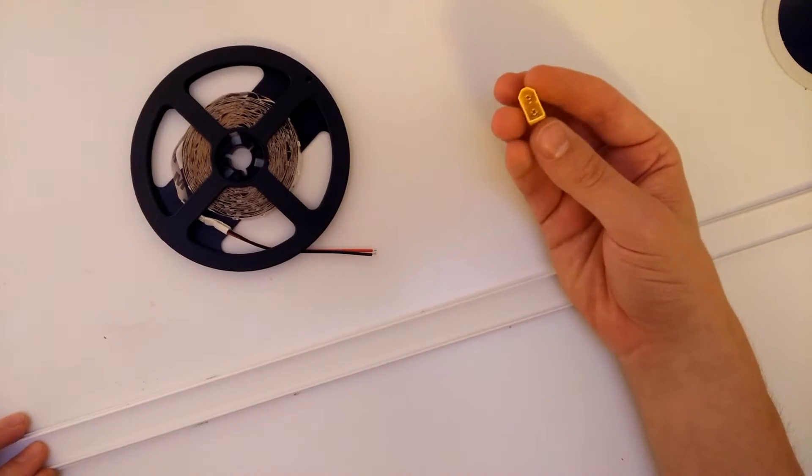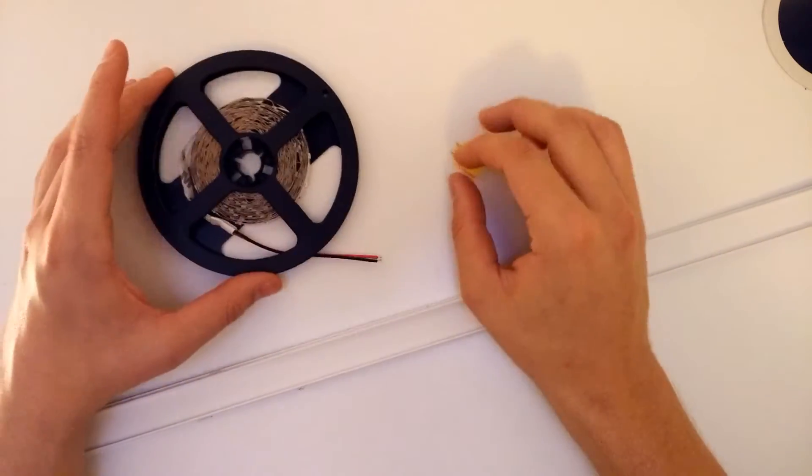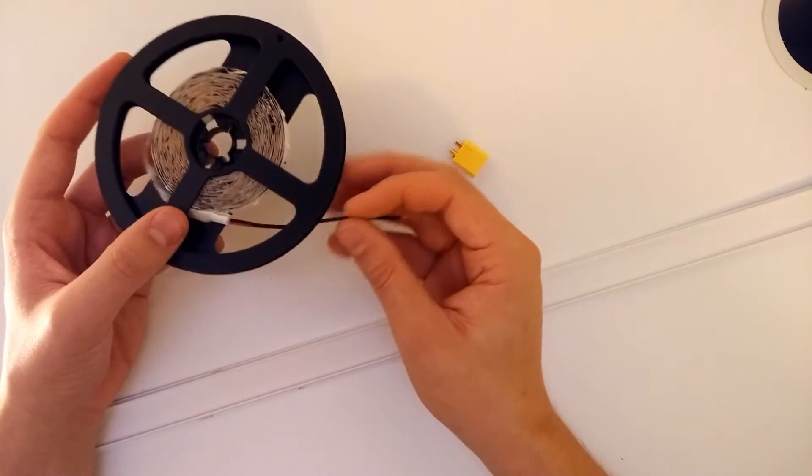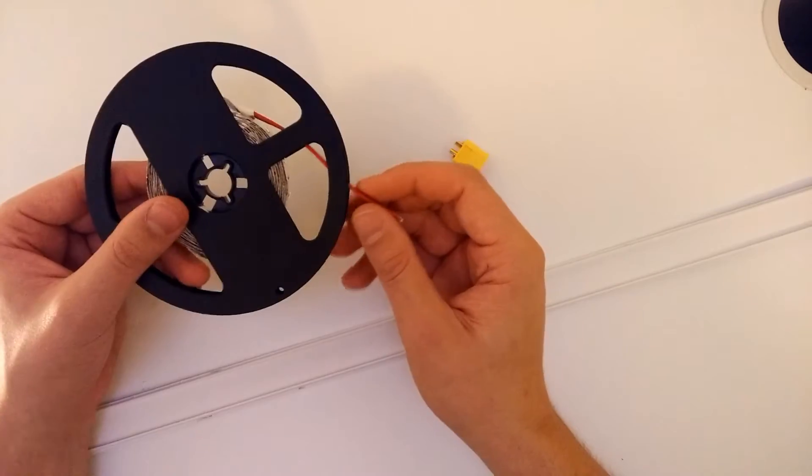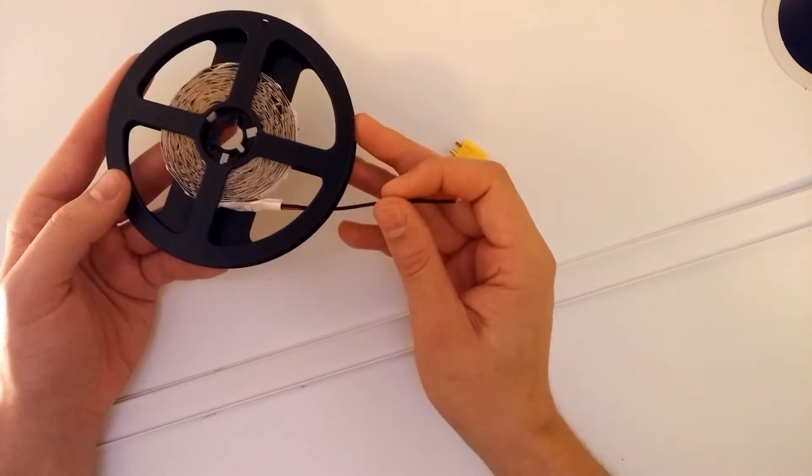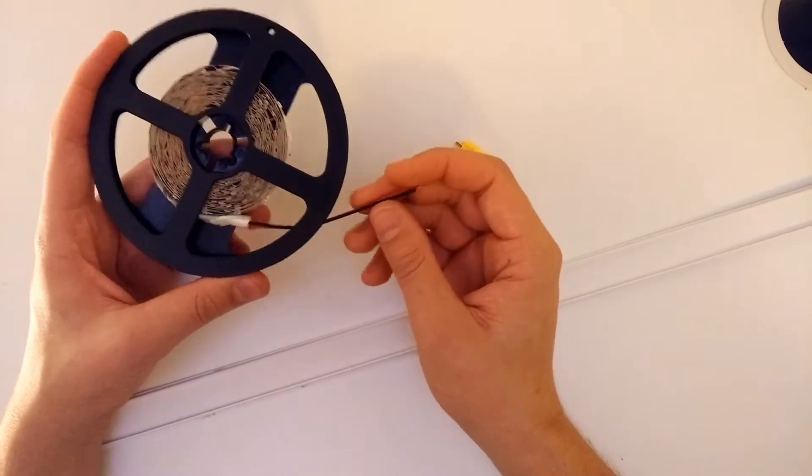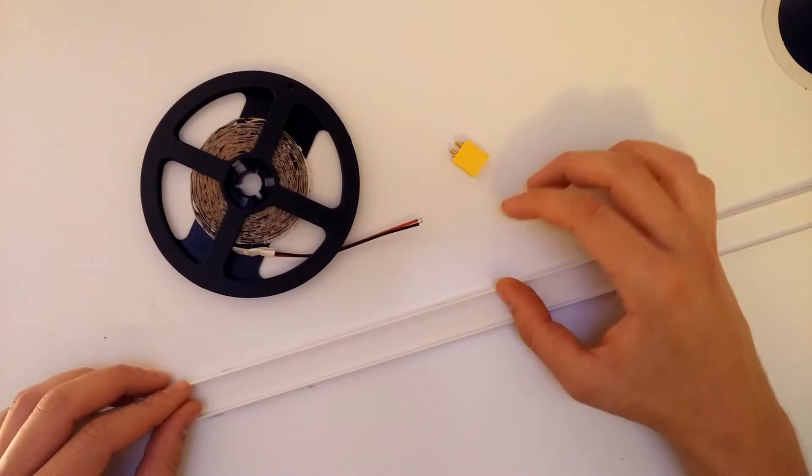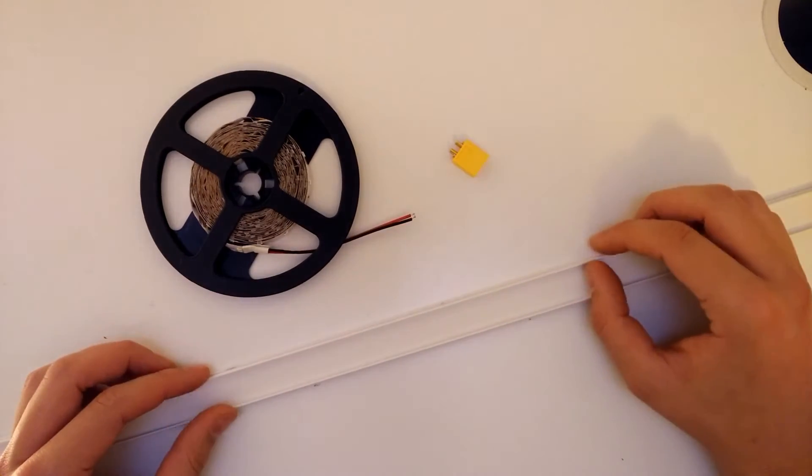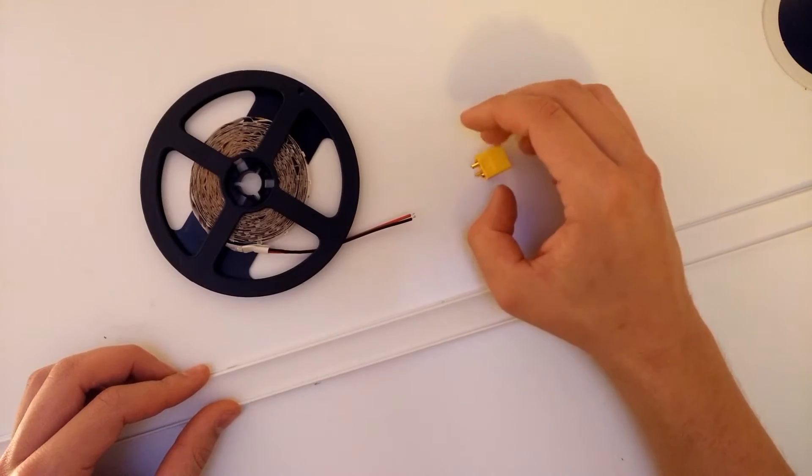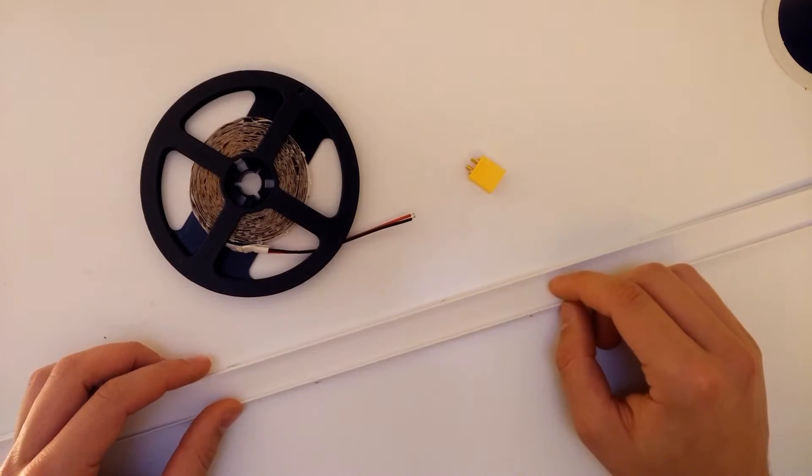You're going to need a male XT60 connector to solder onto here, and this is a pure white LED strip. It's five meters long, and I think it was about £2.50 off Banggood. Altogether, these are pieces you could probably find lying about the house if you're a bit of a technician, or something that's going to cost you less than a fiver easily to produce a really good light source.